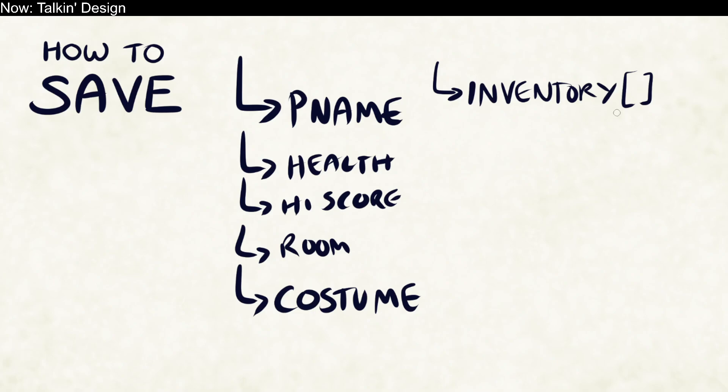This is the main secret — congratulations, you've learned how to save your adventure game. There are a couple more categories of things to save though. One is inventory items. Another important category is flags. Saving and loading flags is important — a flag is simply something logical that happened.